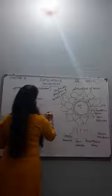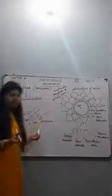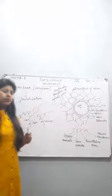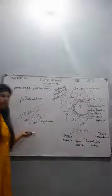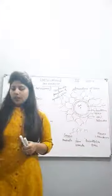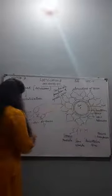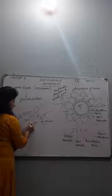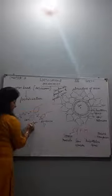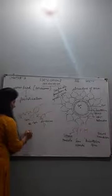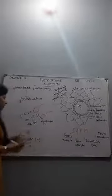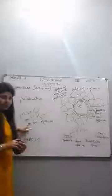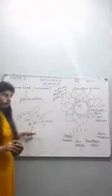No other sperm can fertilize this ovum after the potential change occurs. The nucleus of the sperm then fuses with the nucleus of the ovum to form the zygote, which is diploid — containing one nucleus from the ovum and one from the sperm.